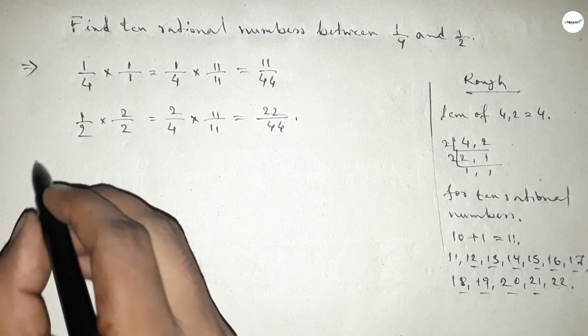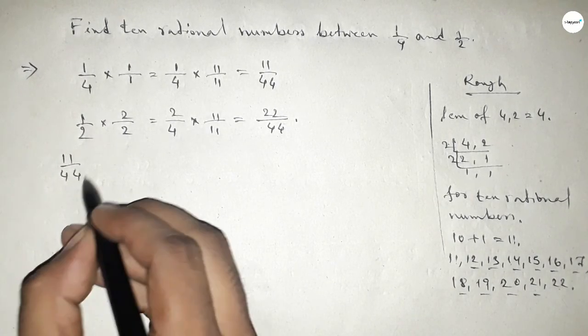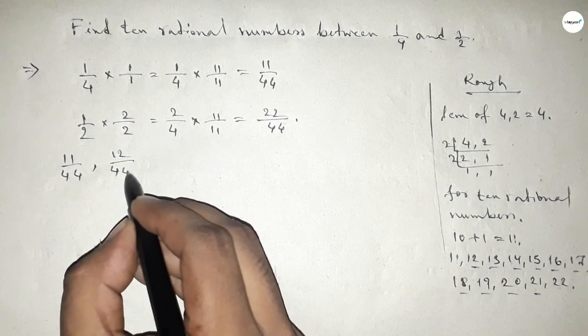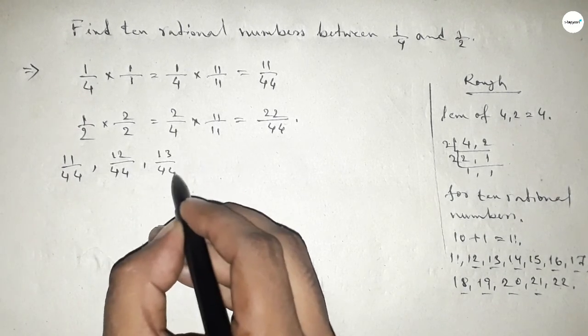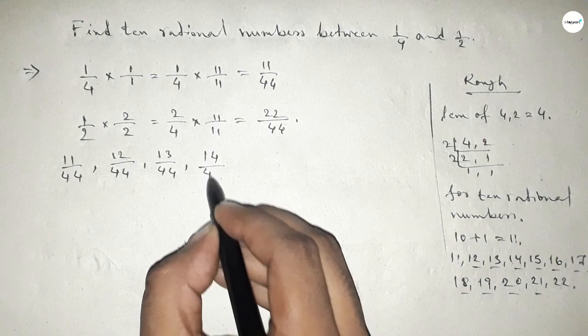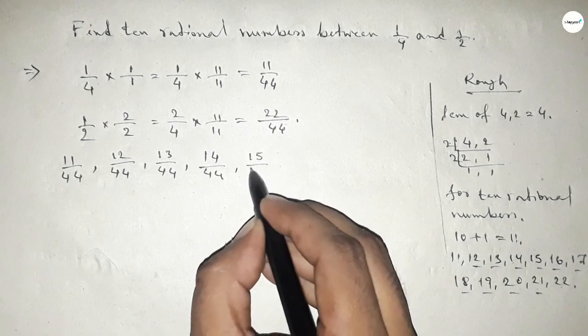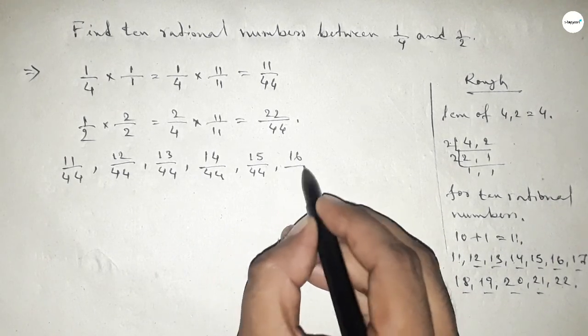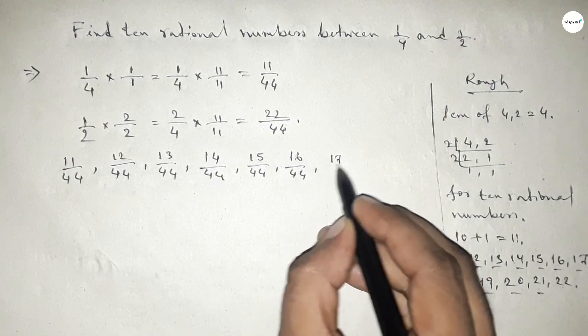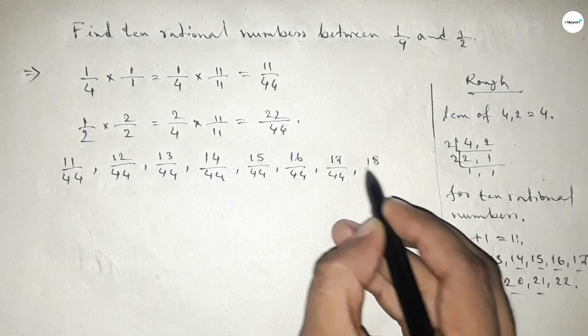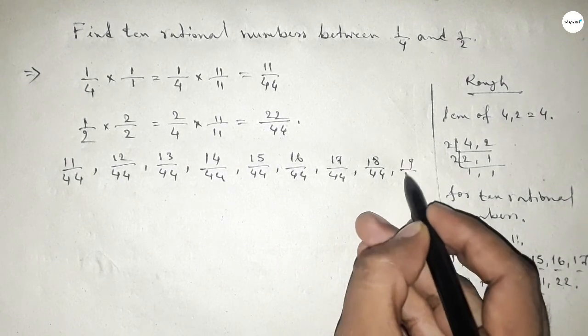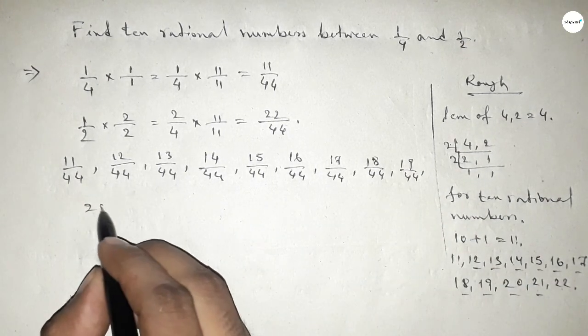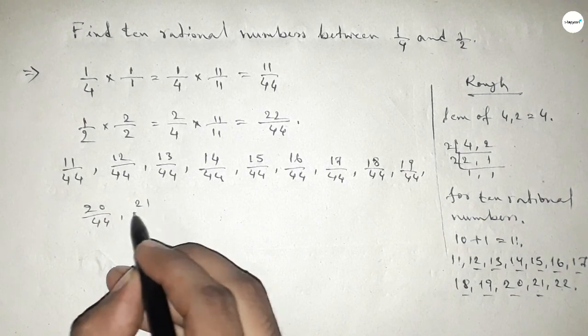So here all the rational numbers are: first one 11/44, 12/44, 13/44, 14/44, 15/44, 16/44, 17/44, 18/44, 19/44, 20/44, 21/44, and last one 22/44.